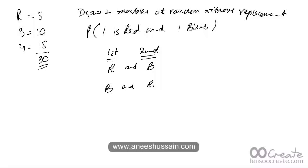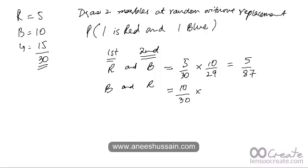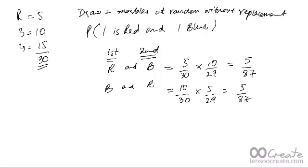For the first arrangement (first red, second blue): probability is 5/30 × 10/29 = 5 out of 87. For the second arrangement (first blue, second red): probability is 10/30 × 5/29, which also simplifies to 5 out of 87. Since these are two separate possibilities and we need either one to occur (OR condition), the total probability is 5/87 + 5/87 = 10 out of 87.